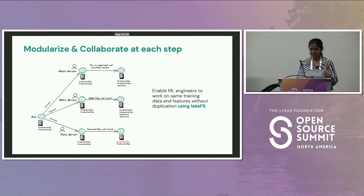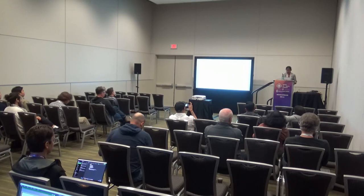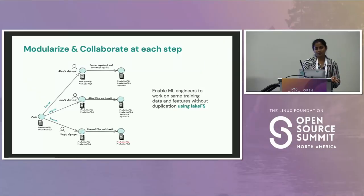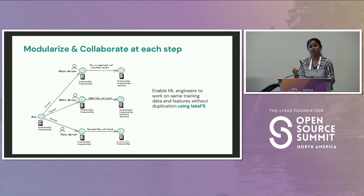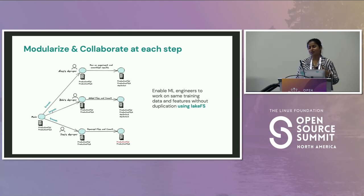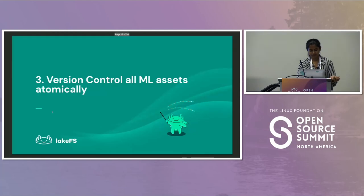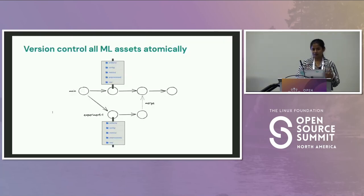Unlocking collaboration: LakeFS branches give teams isolated environments to work on common training data without duplicating it in multiple places. It also has Git-like branch protection rules — you can restrict the main branch so only specific teams can merge into it, meaning you're not giving everyone access to your production ML pipeline. For version controlling all assets atomically: when you have data, features, models, artifacts, configs, and metrics, you want all of them captured so that by doing a single checkout you can reproduce a specific iteration of an experiment.